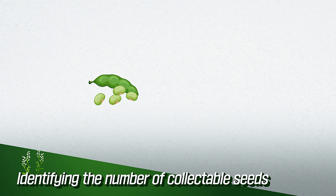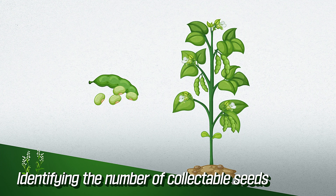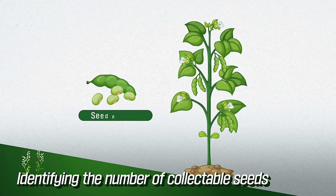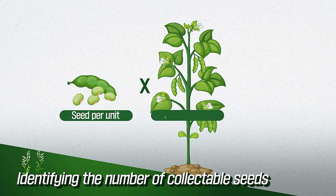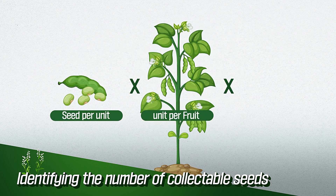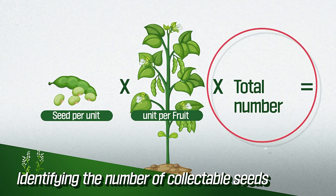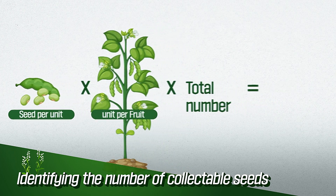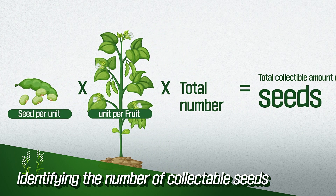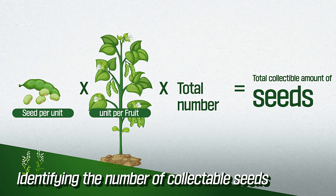To identify the number of collectible seeds, you can predict the total number of collectible seeds by multiplying the number of seeds per fruit by the number of fruits per individual and the total number of individuals.